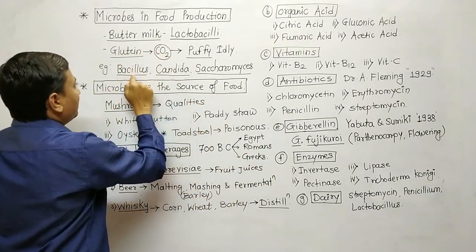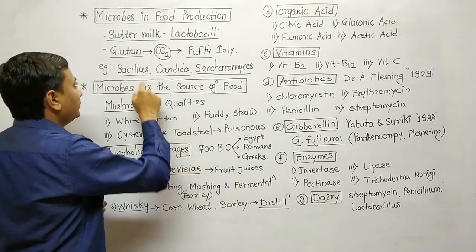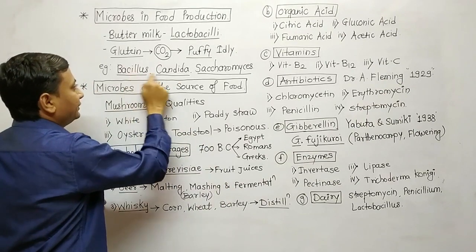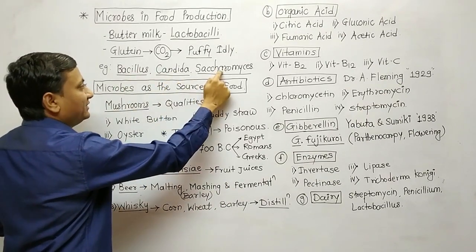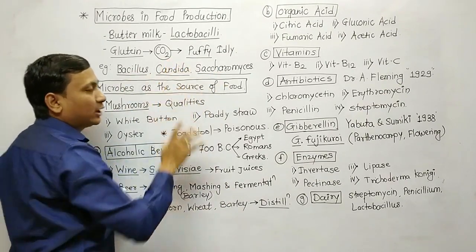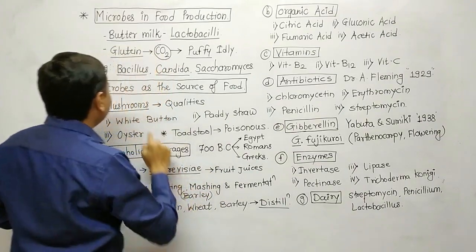In food production, other microorganisms can also be used — Bacillus, Candida, and Saccharomyces. The names of microorganisms are very important in this particular chapter.